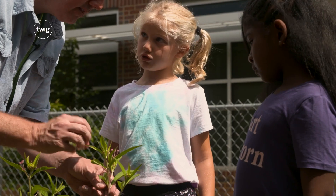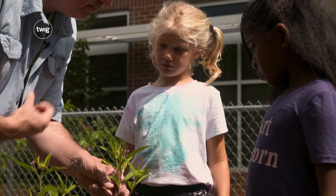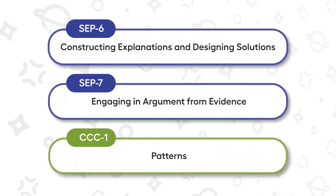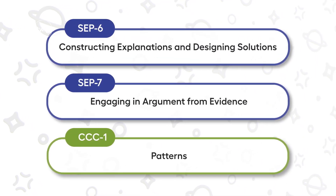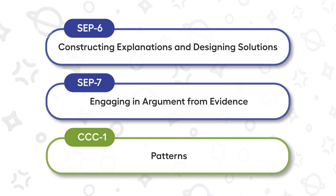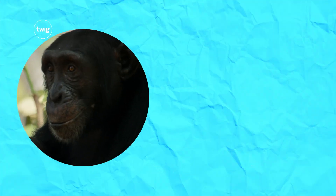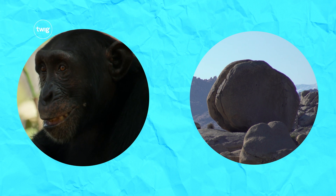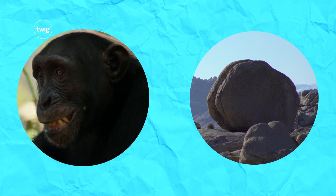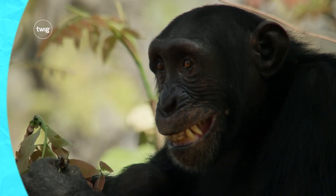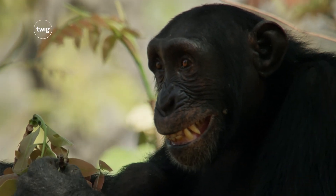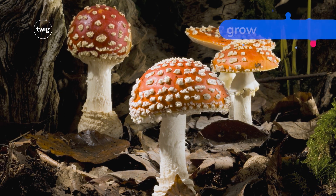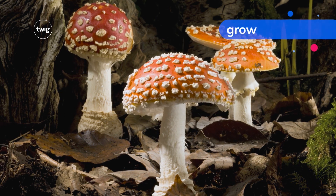This first step in distinguishing what identifies something as living also gives opportunities for students to argue from evidence and identify patterns. They do this in a video lab where they devise a checklist to apply to different objects — for example: Does it grow?